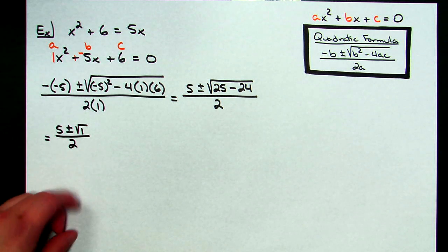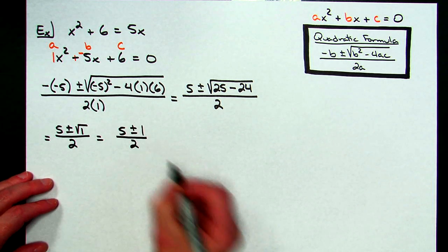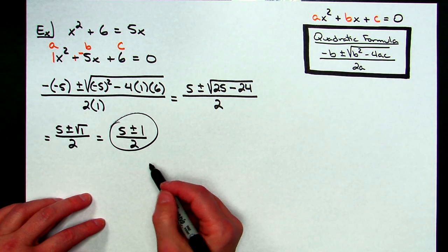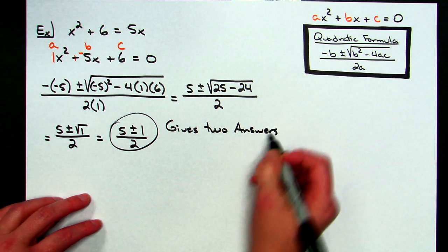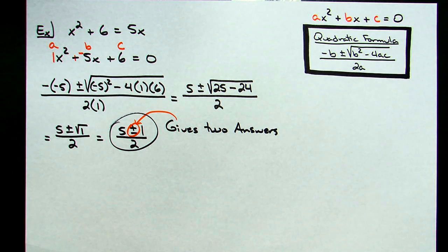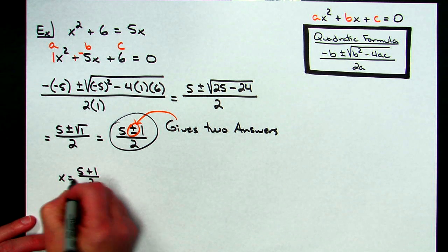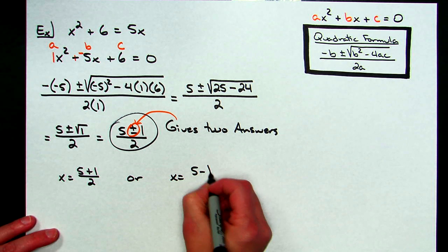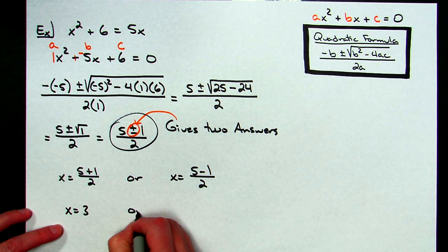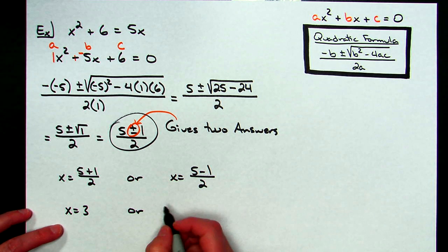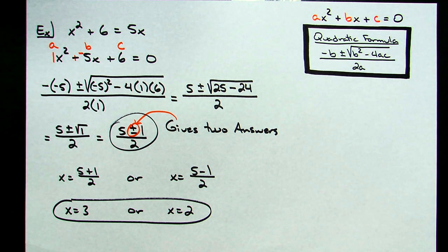25 minus 24 gives me 1 under the radical, so: 5 plus or minus the square root of 1, all over 2. The square root of 1 is 1, so this simplifies to 5 plus or minus 1, all over 2. This gives two answers: 5 plus 1 over 2 equals 6 over 2, so x equals 3; and 5 minus 1 over 2 equals 4 over 2, so x equals 2. Because the square root worked out to a whole number, we didn't need a calculator at all.